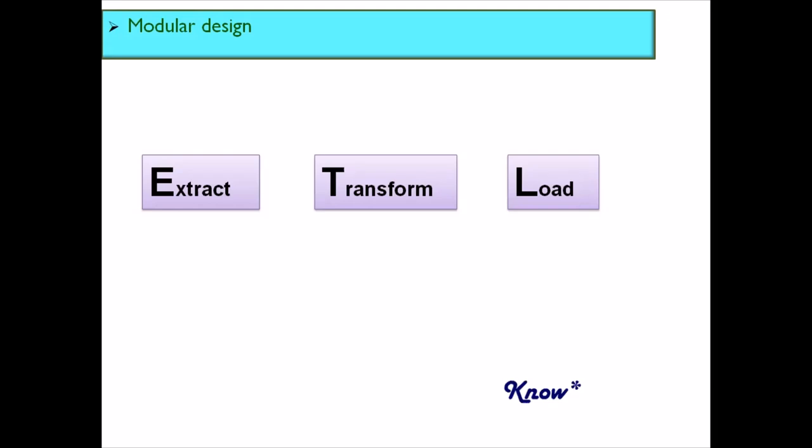The third job is a Load job, which reads from the output dataset produced in the transformation job and simply loads it into your target system — whether that is a database or a sequential file.